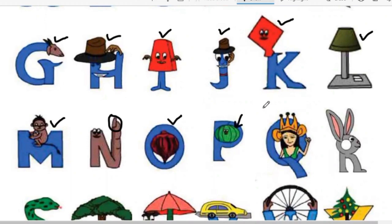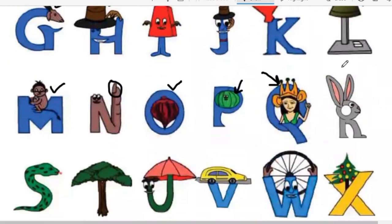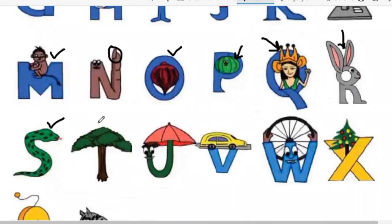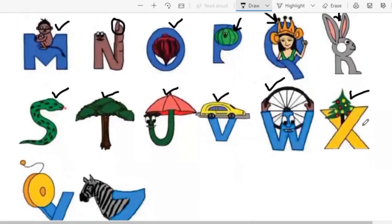Q for queen. R for rabbit. S for snake. T for tree. U for umbrella. V for van. W for wheel. X for x-mas tree. Y for yoyo. And Z for zebra.